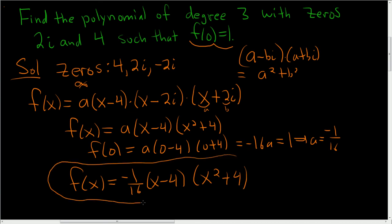And that is the final answer. That is the polynomial of degree 3 with zeros 2i, 4, and negative 2i, such that f(0) is equal to 1.